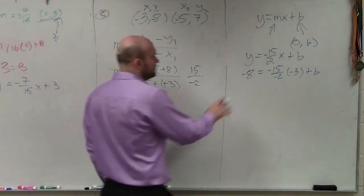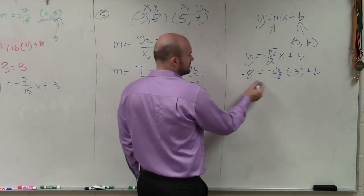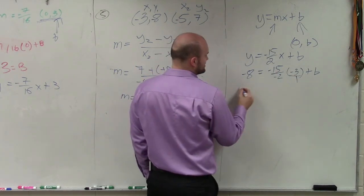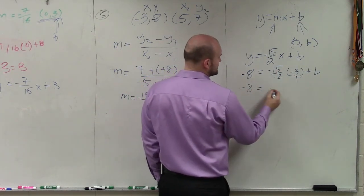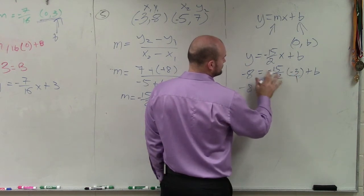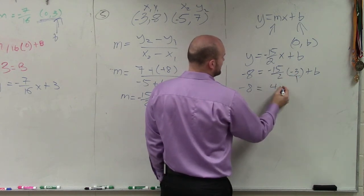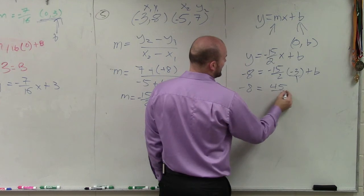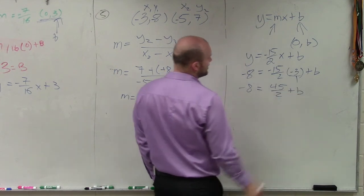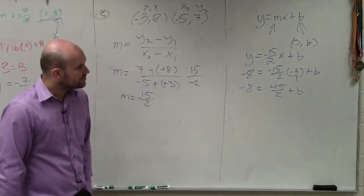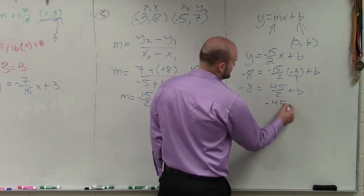So to do this now, basically all I'm going to do is multiply again across. So I have negative 8 equals, that becomes a positive 45 over 2 plus b. Now, to go ahead and solve for b, I subtract 45 over 2.